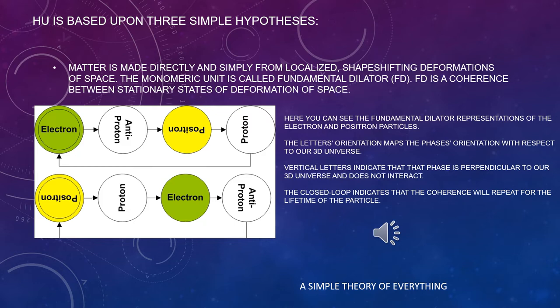Here you can see the fundamental dilator representations of the electron and positron particles. The letter's orientation maps the phase's orientation with respect to our 3D universe. Vertical letters indicate that that phase is perpendicular to our 3D universe and does not interact. The closed loop indicates that the coherence will repeat for the lifetime of the particle.